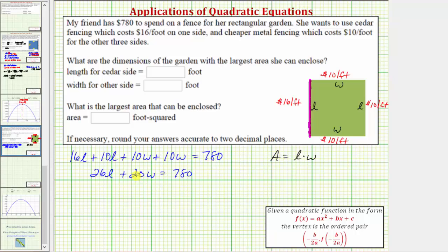It doesn't matter which variable we solve for, let's solve for W. We'll subtract 26L on both sides, which gives us 20W equals 780 minus 26L. Now we'll divide both sides by 20. Simplifying, we have W equals 39 minus 13/10 L.